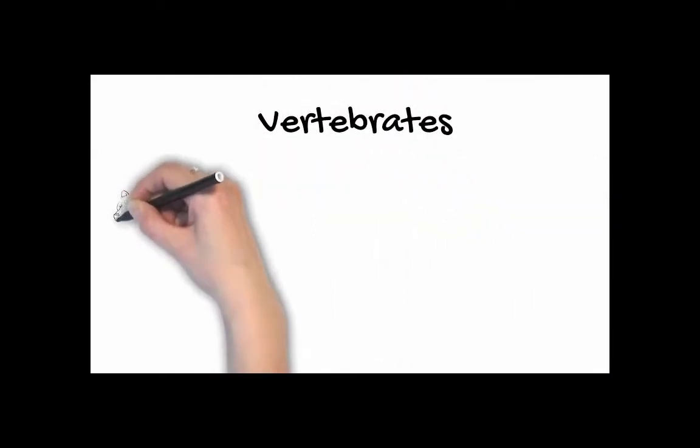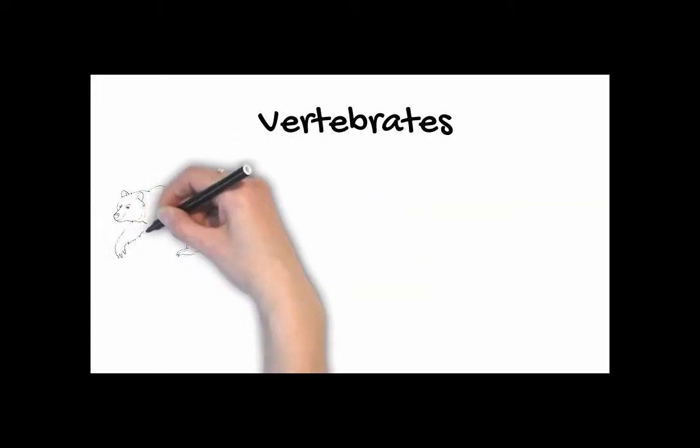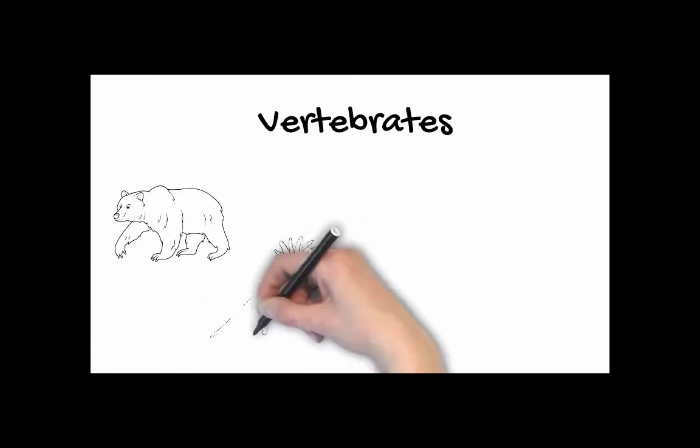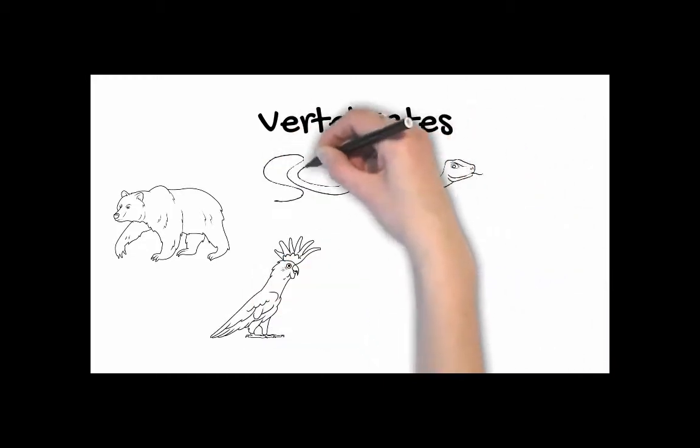The vertebrate group can be further split up into five more categories and those are mammals, birds, reptiles, fish, and amphibians. Each of those different groups have characteristics that are unique to those groups.